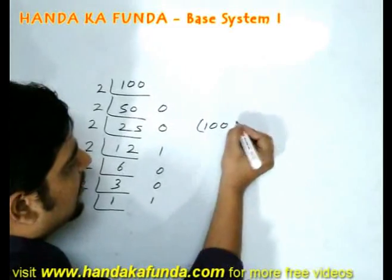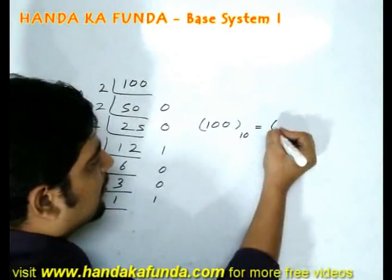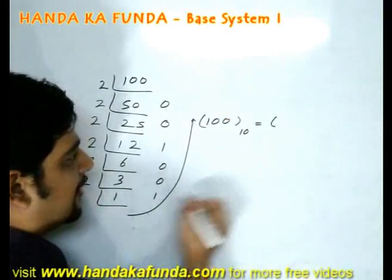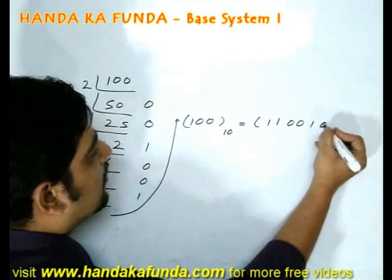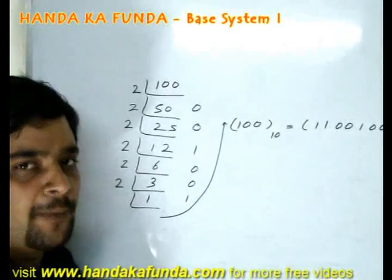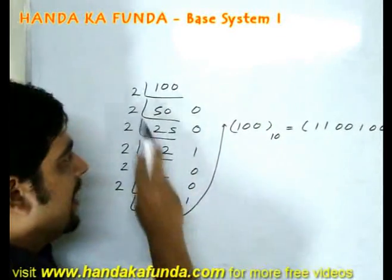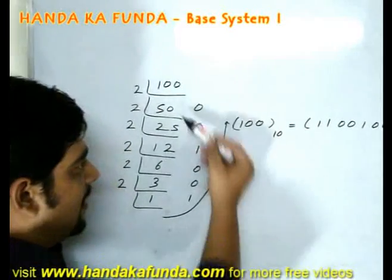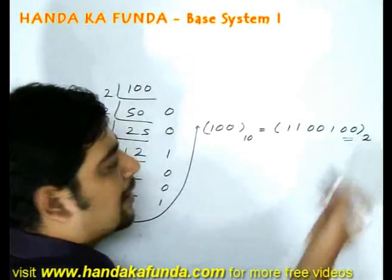So if my number is 100 in the decimal system and I want to convert it to binary, its conversion would be — reading the remainders from bottom to top — 1, 1, 0, 0, 1, 0, 0 in the binary system. An important point to note: the number 100 was divisible by the base 2 exactly twice, which means the last two digits will be 0.